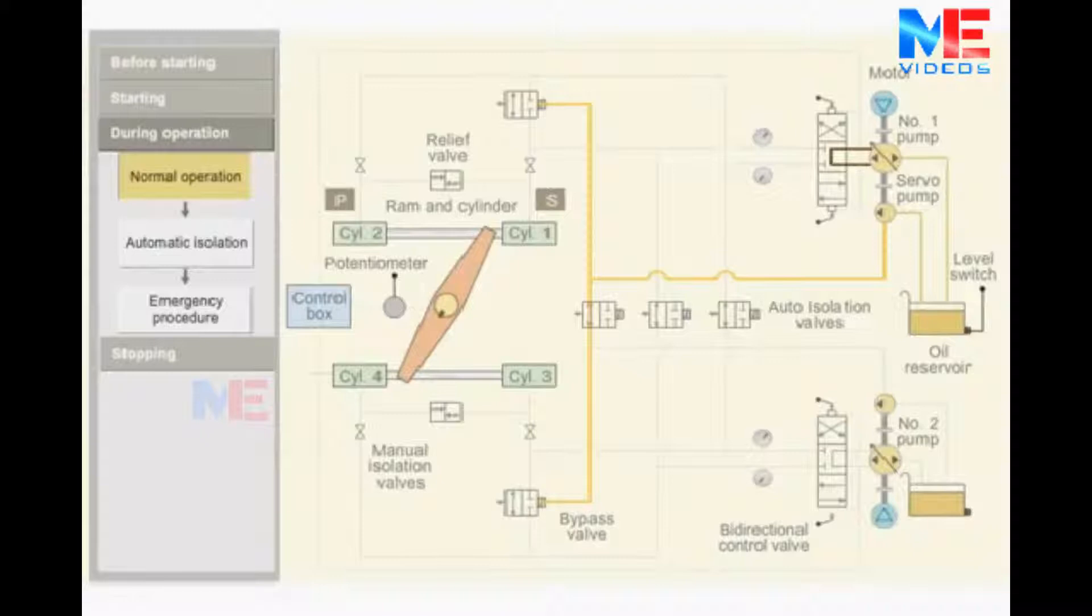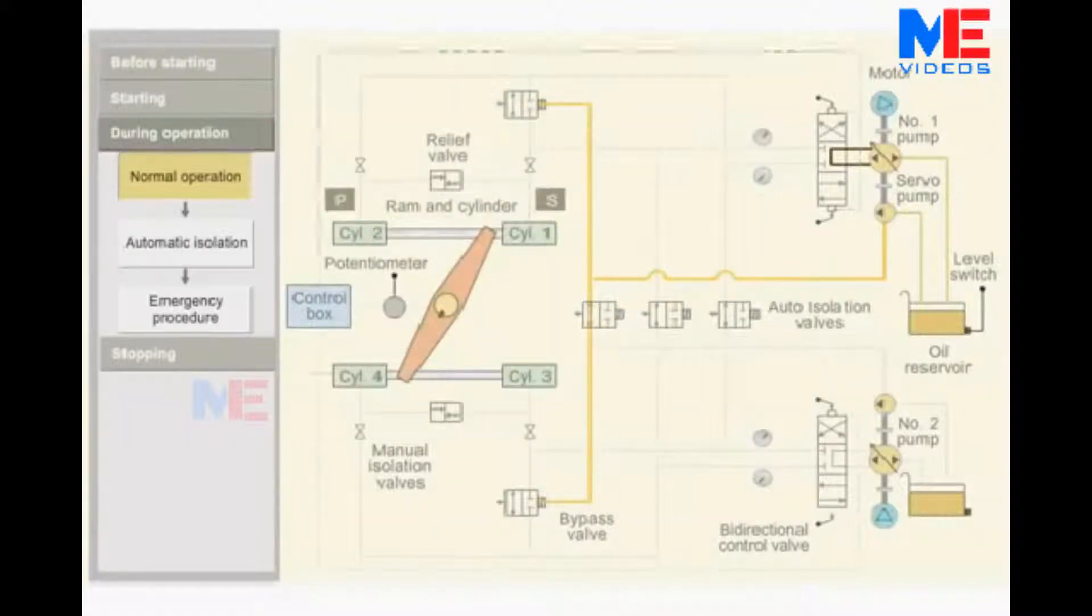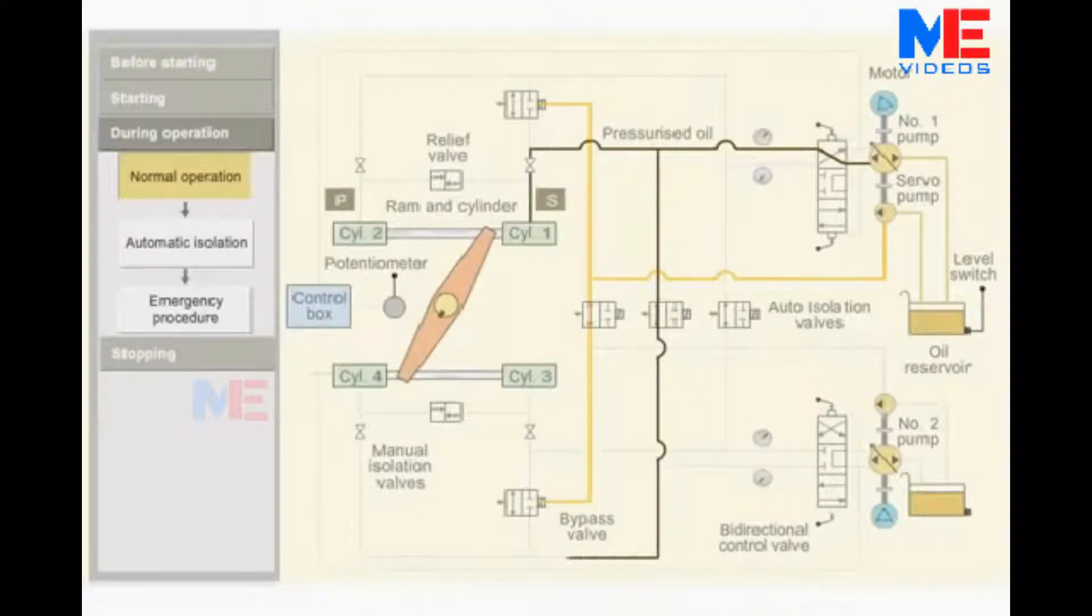When starboard order is given from the bridge, the control box sends a signal to bidirectional control valve. The valve moves aft side. The pressurized oil is pumped into ram 1 and 4. The pressurized oil moves the ram. The tiller in turn moves the rudder stock from the port to starboard position.